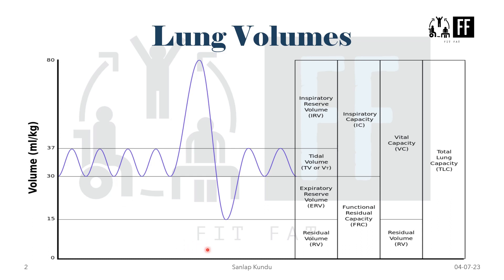Now we are left with the residual volume. This is the volume of air remaining in the lungs even after forceful expiration. It is significant for two reasons: it helps to aerate the blood in between breathing and during expiration, and it maintains the contour of the lungs. The normal value of residual volume is 1200 milliliters, or 1.2 liters.